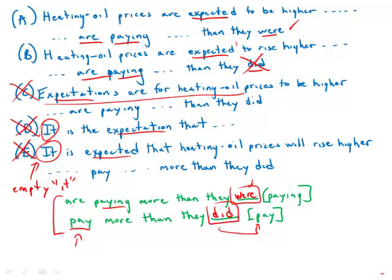Also notice this phrase to rise higher. To rise higher. That's redundant. If you rise, of course you're going higher. To rise higher is completely redundant. So B is out. A is the only one that is free of grammatical error. It is correct. It is sleek and direct. It is by far the best answer choice.